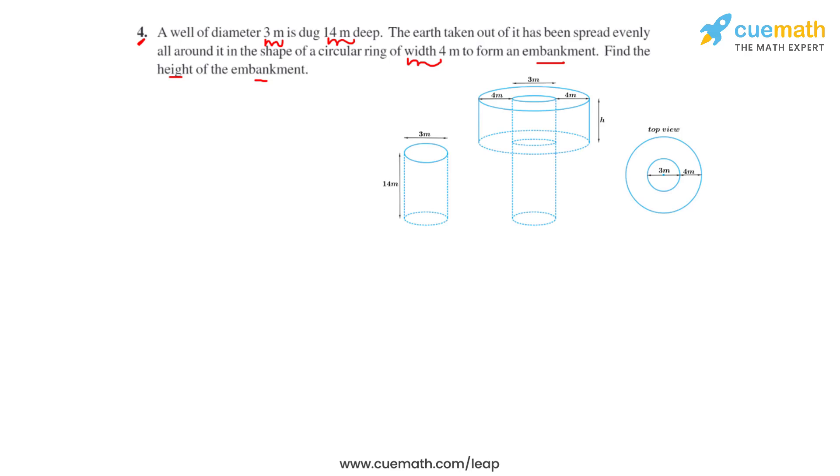We will draw the figure first to understand the question better. This is the 14-meter deep well which is dug, and this is the mouth of the well which is 3 meters wide. So the radius of the well is 3/2 meters. When the earth is taken out of this well and spread evenly around it in the form of a ring,